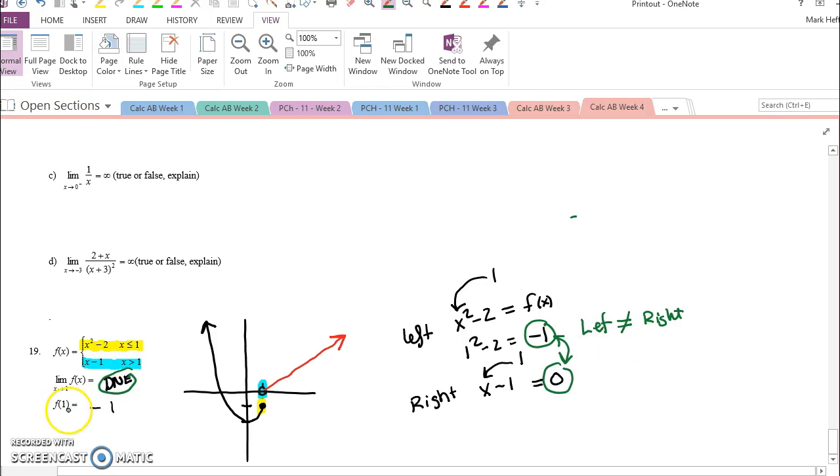How could we find out what the function value was? We would just plug in our 1 into the x that is being defined by x is less than or equal to 1 and we get this answer negative 1 in this case.